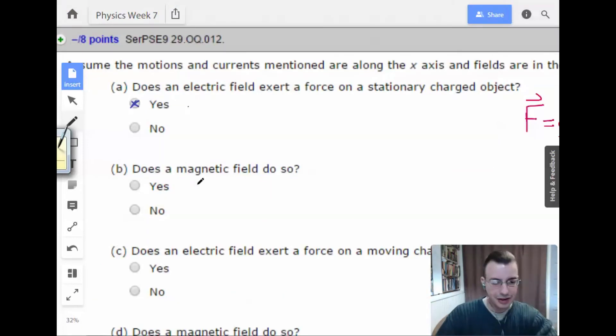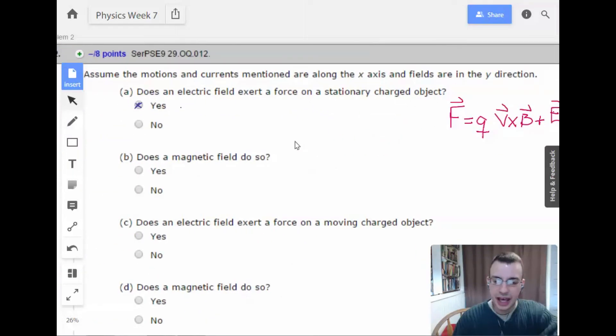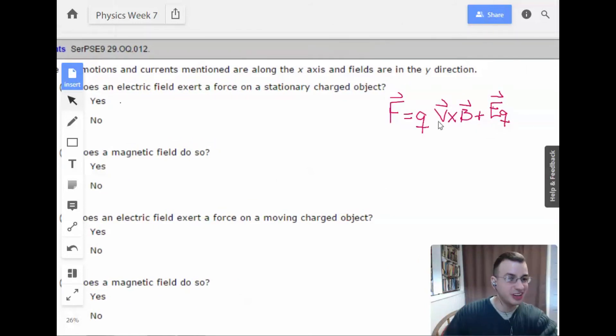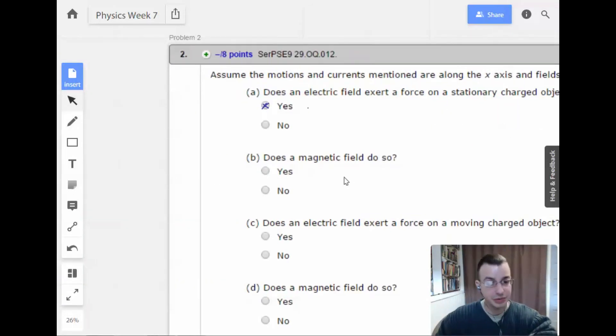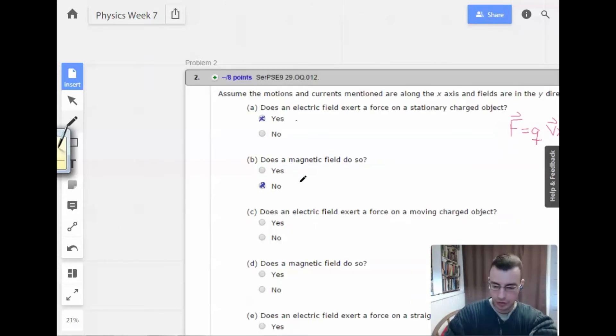Does a magnetic field do so? All right, so what they're saying here is, does a magnetic field exert a force on a stationary charged object? No, because they have a velocity right here. And stationary specifically means no velocity. Therefore, charged object, magnetic field, still require velocity. If velocity equals zero, then we have no magnetic field. So, no, or false.